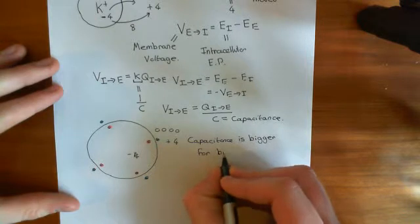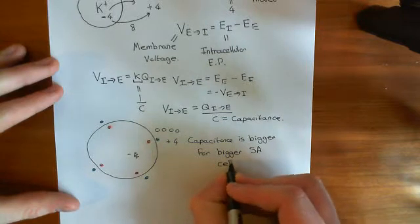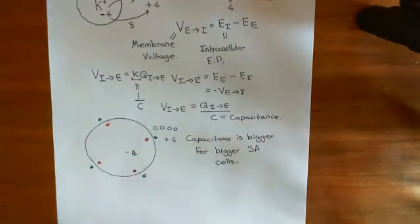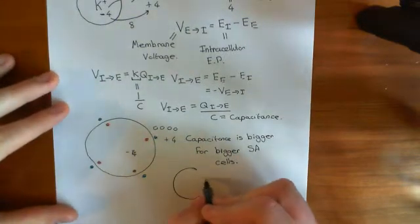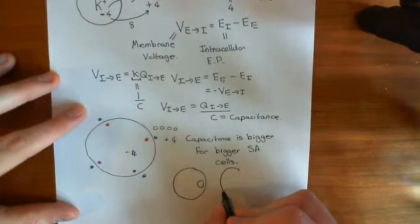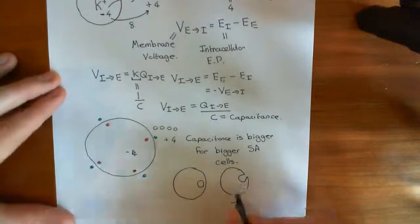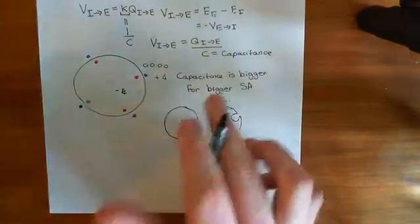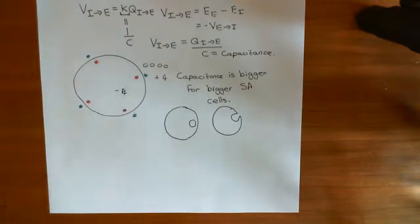Capacitance is bigger for bigger surface area cells. So why can we use that to measure vesicle fusion? If we take a cell which initially has a vesicle docked at its membrane, and that vesicle fuses, the surface area of the cell is going to go up. And if the surface area of the cell goes up, that's going to mean the capacitance goes up. So we should be able to see an increase in the capacitance of the cell membrane in response to a vesicle fusing.